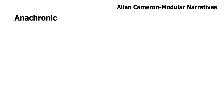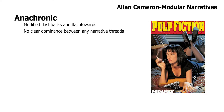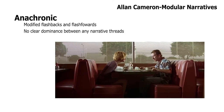The first type is anachronic. These can involve modified flashbacks or flash forwards — it's when there's no clear dominance between any of the narrative threads. A great example would be the film Pulp Fiction. The movie throws the viewer from one location to another, not necessarily in a linear order. It's quite difficult at times to know who we're meant to be following, as we're thrown from one storyline to another.